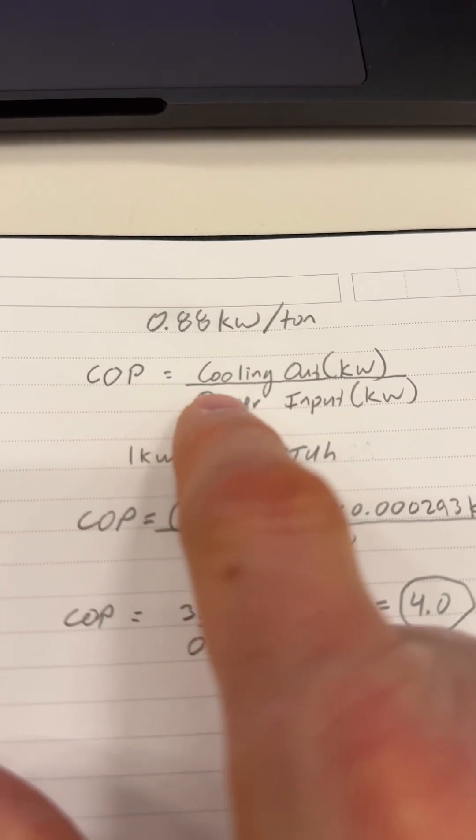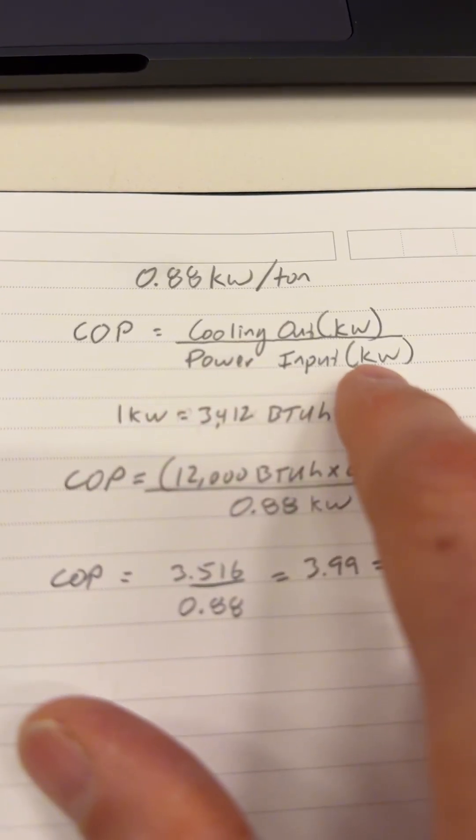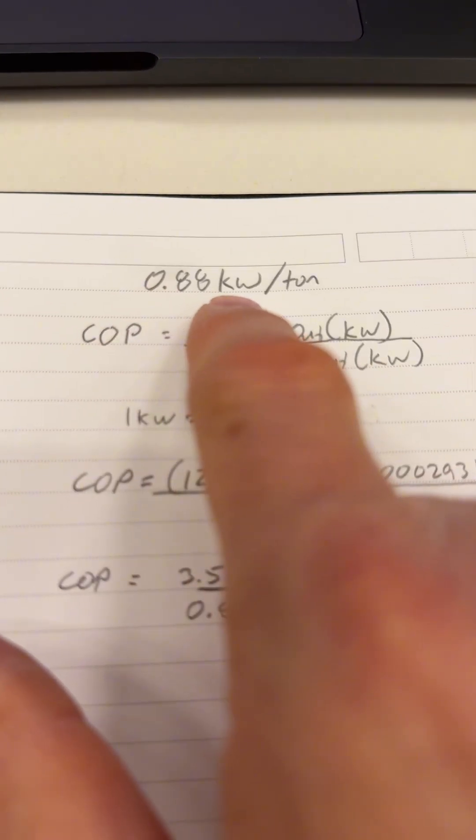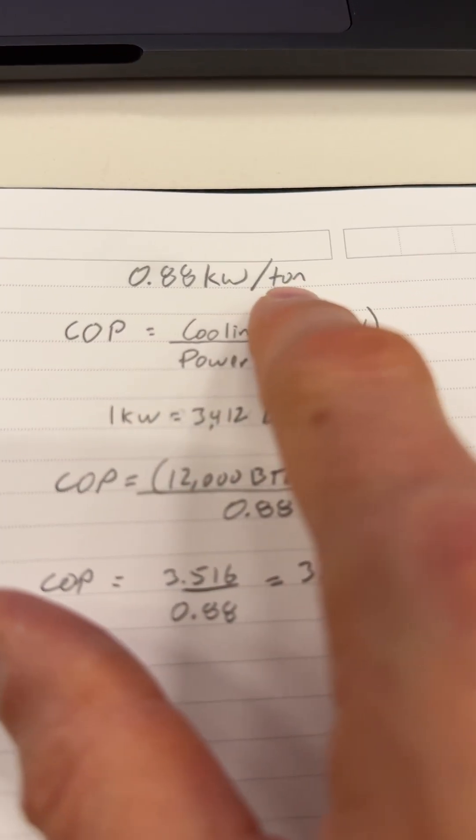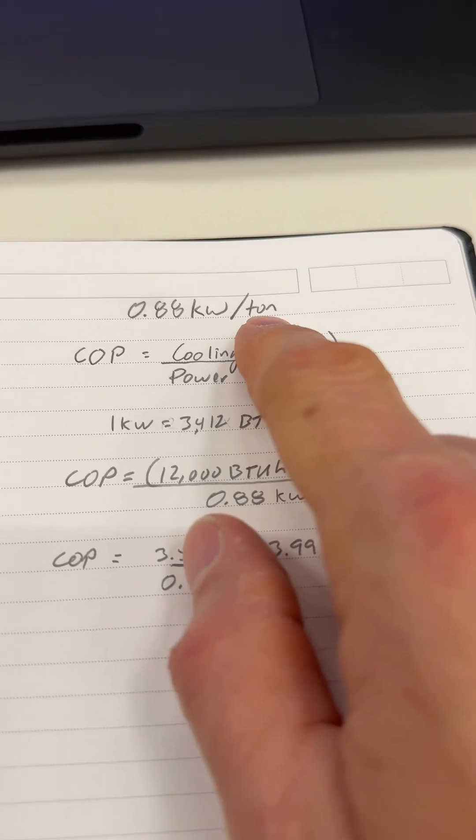COP is calculated as the cooling output in kilowatts divided by the power input in kilowatts. We know the power input is 0.88 kilowatts, and the output is a ton, so we have to convert the tonnage to kilowatts.